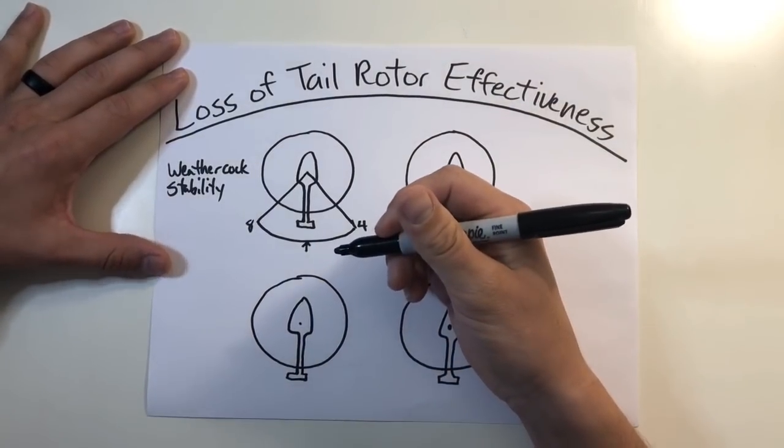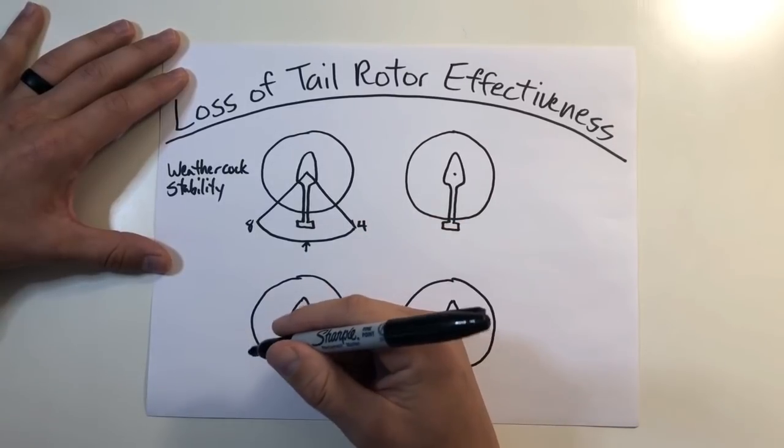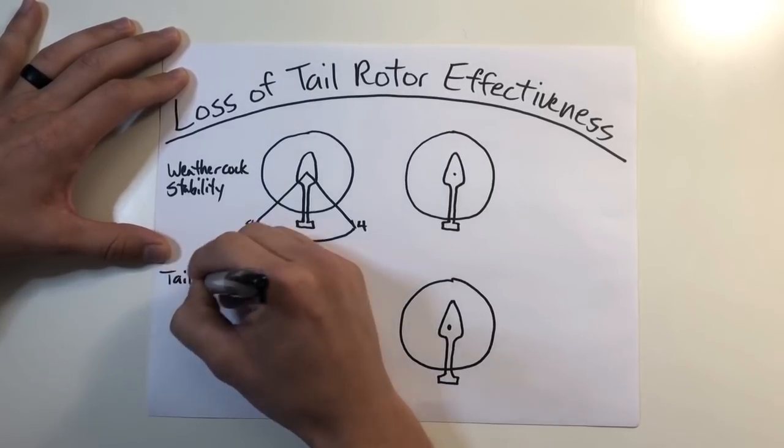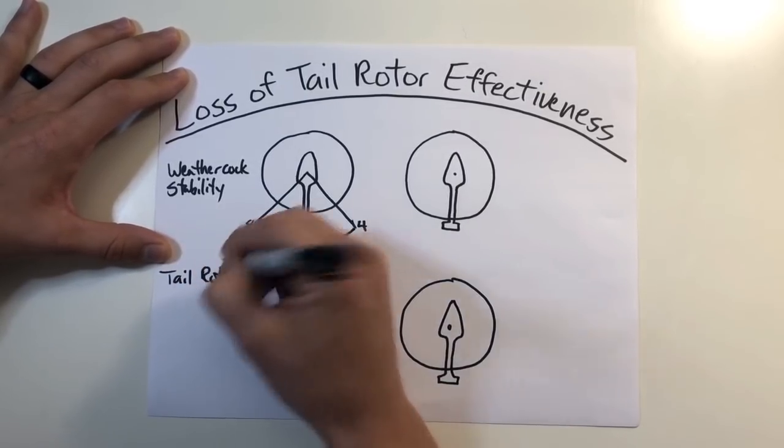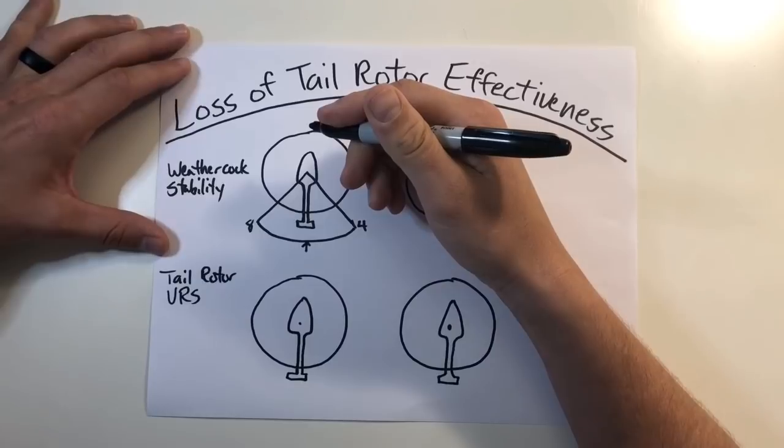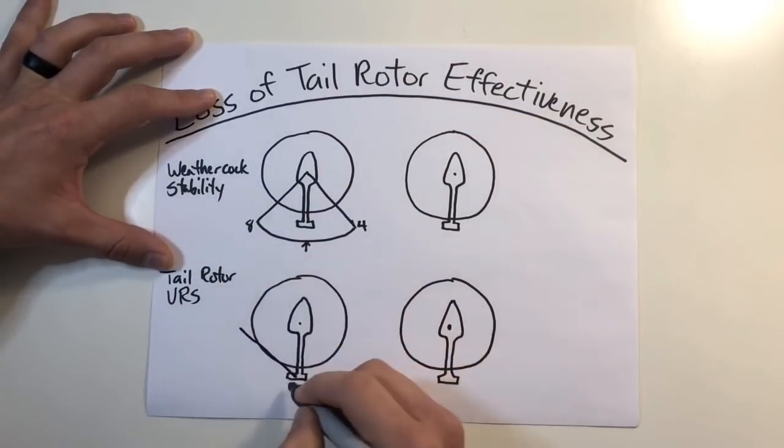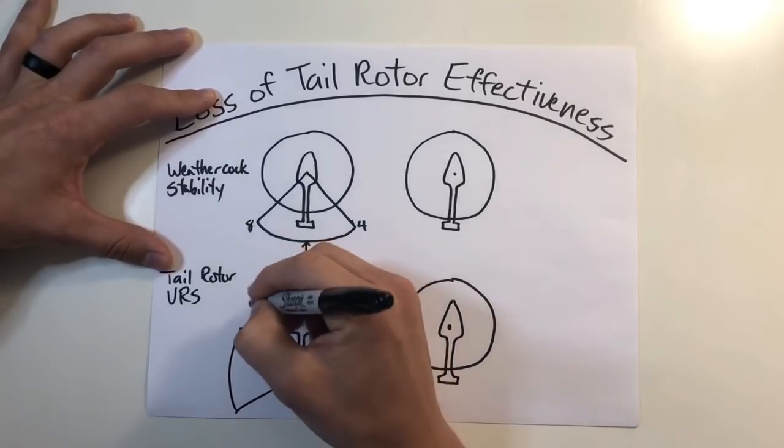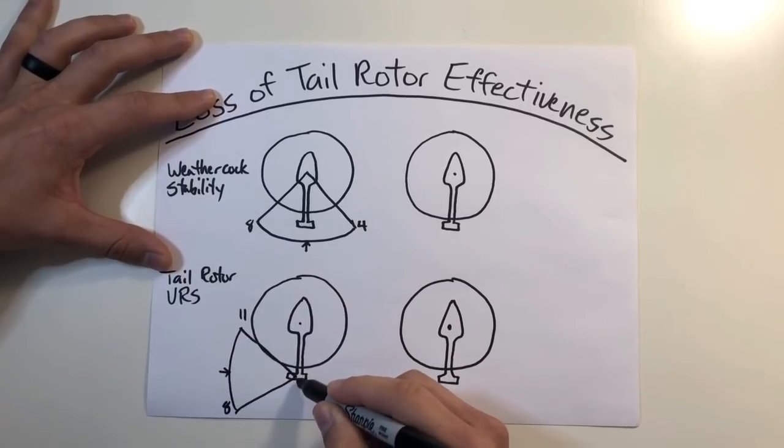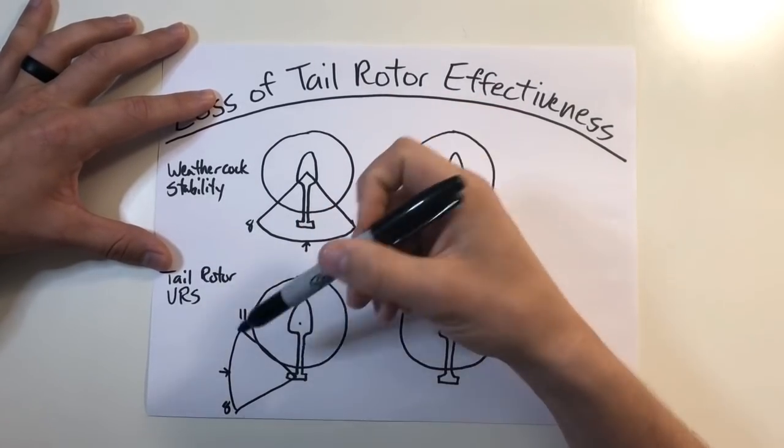There's another region for LTE where winds impact the tail rotor between the 8 o'clock to the 11 o'clock positions. This creates a tail rotor vortex ring state. If you remember from the previous videos, vortex ring state is generally synonymous or can be also associated with a settling with power condition. What's going on here is your tail rotor is located here and you have winds coming from the 11 o'clock to the 8 o'clock position, generally impacting the tail rotor as such.